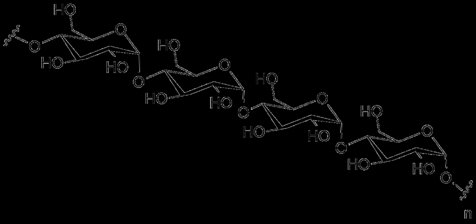Nutritionally, polysaccharides are common sources of energy. Many organisms can easily break down starches into glucose, however, most organisms cannot metabolize cellulose or other polysaccharides like chitin and arabinoxylans. These carbohydrate types can be metabolized by some bacteria and protists. Ruminants and termites, for example, use microorganisms to process cellulose.